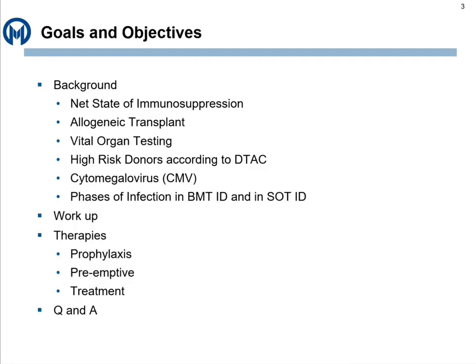Since it's been a little bit of time since I've given a presentation to the fellows, we're going to review some of my favorite elements in reference to transplant ID, like the net state of immunosuppression. We're going to talk about how we choose our transplants, what we do during vital organ testing over three days, and some of the discussion points about high-risk donors as defined by DTAC. We're going to talk about CMV background, which is the majority of this presentation, in the context of when these infections occur in transplant, the workup of CMV, general therapies, and the different types of mechanisms or algorithms, as well as the drugs.